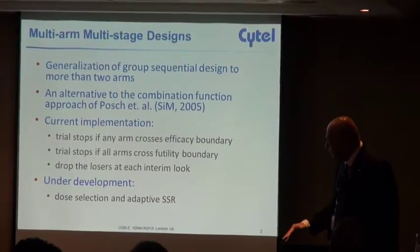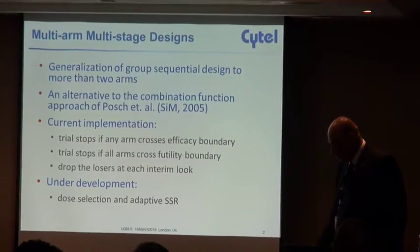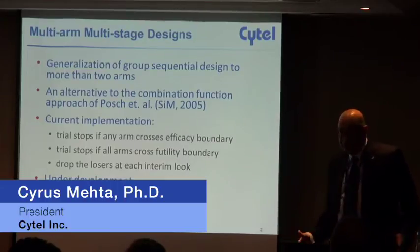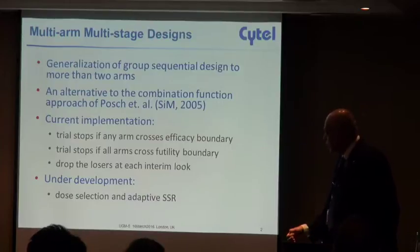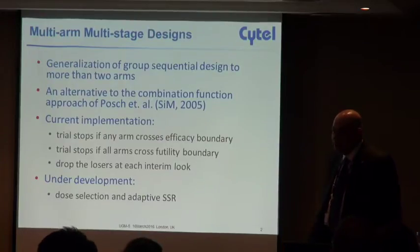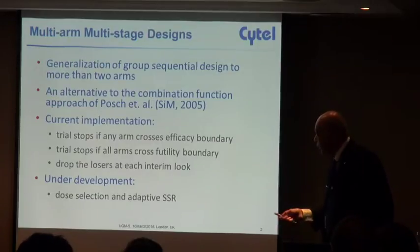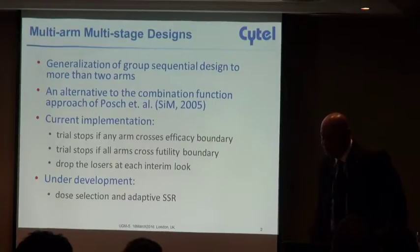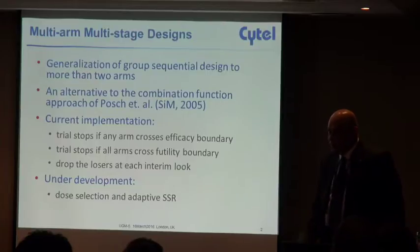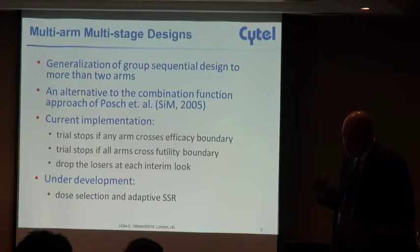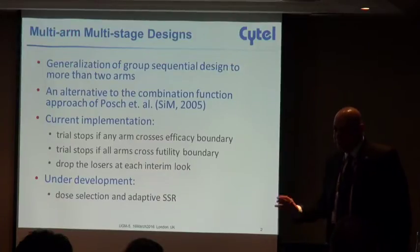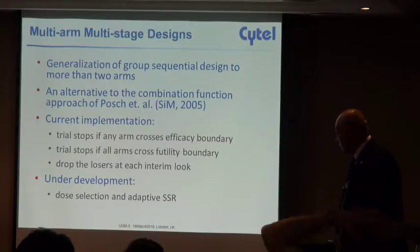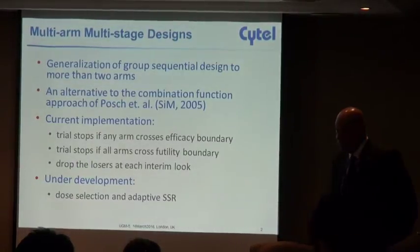In its current implementation, which we are going to give you a chance to play with tomorrow, we have stopping boundaries for efficacy and futility. The trial will stop the first time that any of these multiple arms crosses an efficacy boundary, or if all arms cross a futility boundary. In addition, as you go along look by look, you can drop the losers. Any individual arm that crosses a futility boundary can be discarded and the remaining arms can keep going.